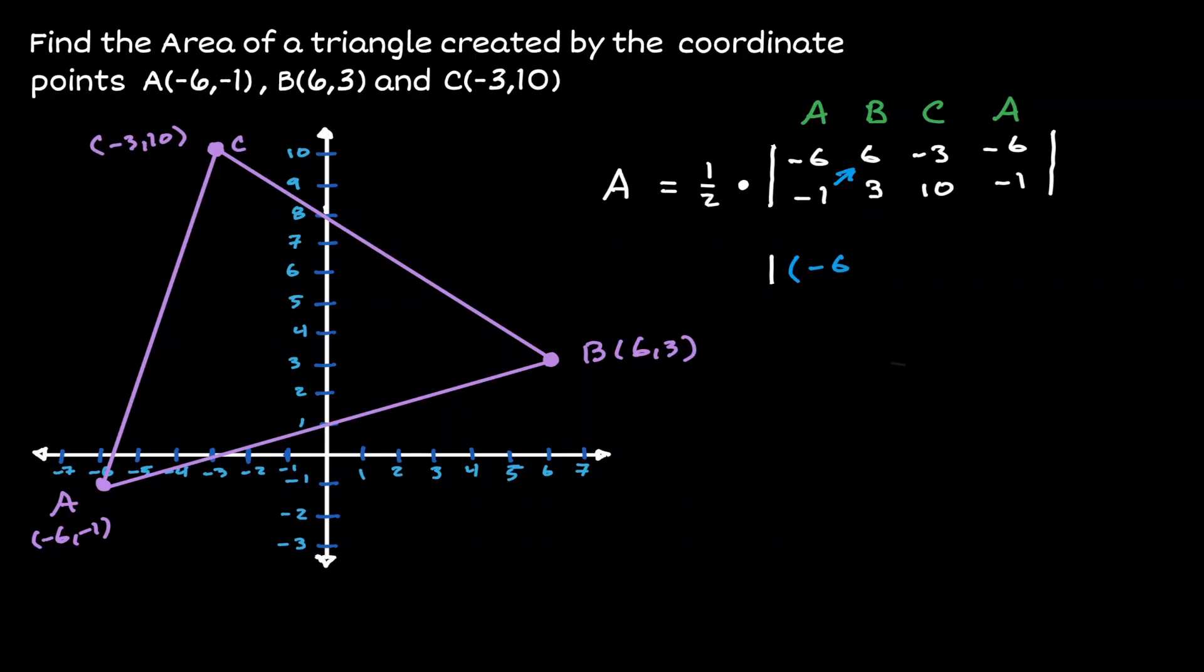And then we're going to do it with the next set. Let's get the y value of B, and let's multiply it in a diagonal way, going upwards with -3, that is equivalent to -9. And then let's do the same with the next value. Let's get 10 and multiply it diagonally with -6, that would be -60.